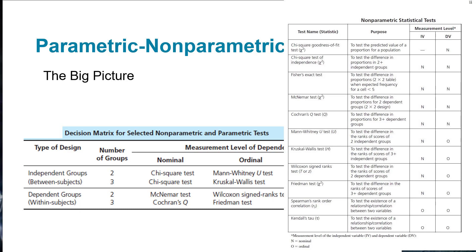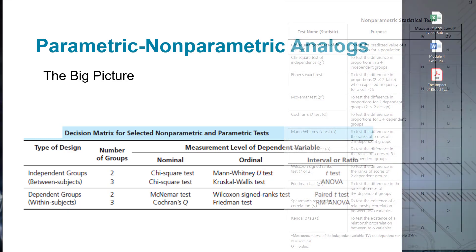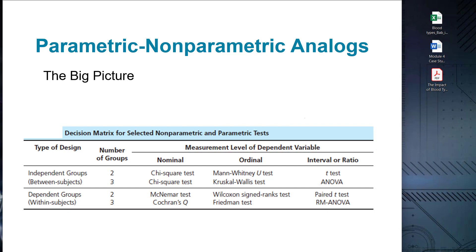By employing non-parametric tests, researchers can analyze data with fewer assumptions and obtain robust results, particularly for non-normally distributed or skewed data. However, it's important to note that non-parametric tests may have less statistical power compared to their parametric counterparts, especially when the assumptions of the parametric tests are satisfied. In the next module, we will wrap up our testing procedures with correlation and regression of biomedical data.